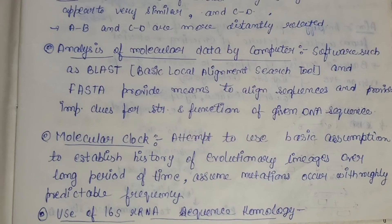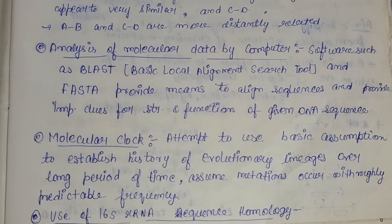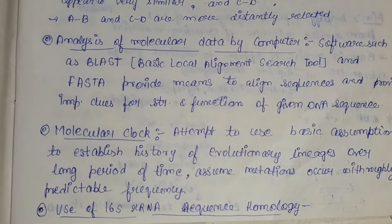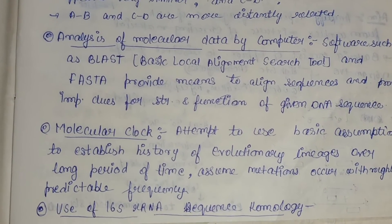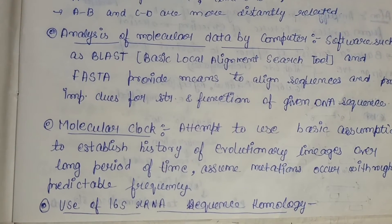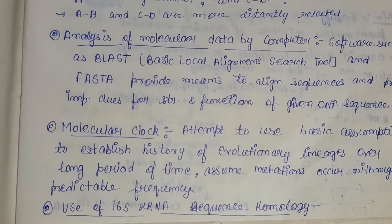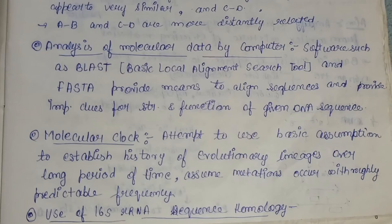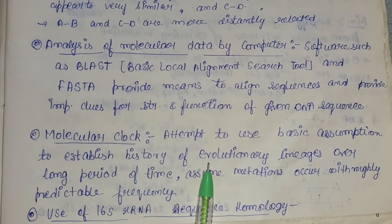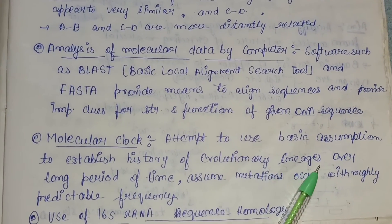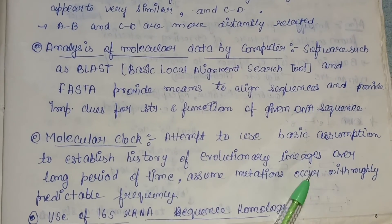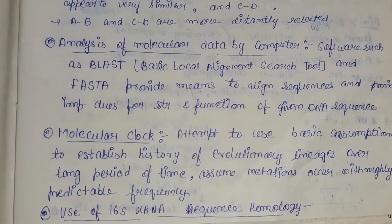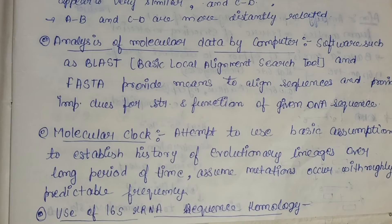The molecular clock is a term for a technique that uses the mutation rate of biomolecules to deduce the time in prehistory when two or more life forms diverged. The biomolecular data used in molecular clock analysis includes nucleotide sequences of DNA or RNA, or amino acid sequences for proteins. It attempts to establish the history of evolutionary relationships over long periods of time by assuming that mutations occur with a roughly predictable frequency.